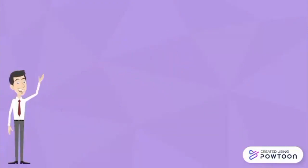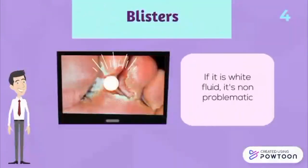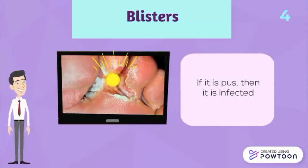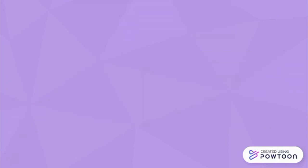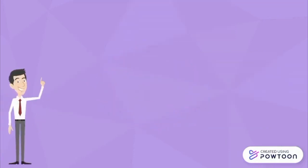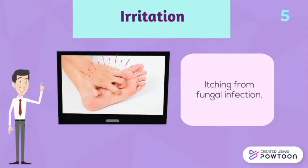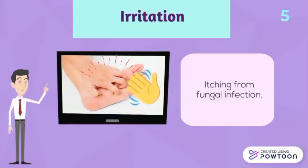Fourth is the presence of blisters. Usually, if it is only white fluid, it is non-problematic as it is in an early stage but needs to be treated. But if it turns into yellow pus, it is a sign of infection and is considered a severe case already. The last one is irritation, which is also a sign of itching obtained from the fungal infection in the toe area, as the patient will have the urge to always scratch in the affected area.